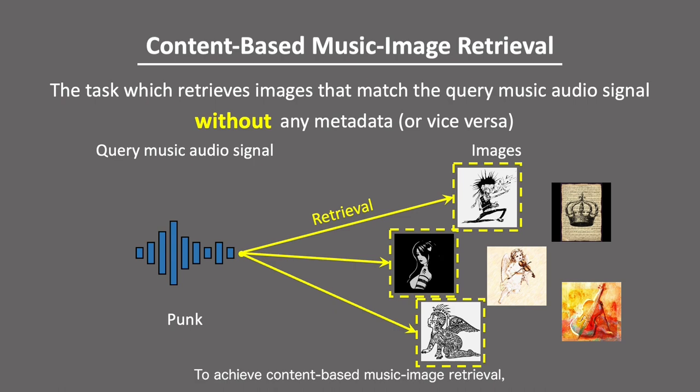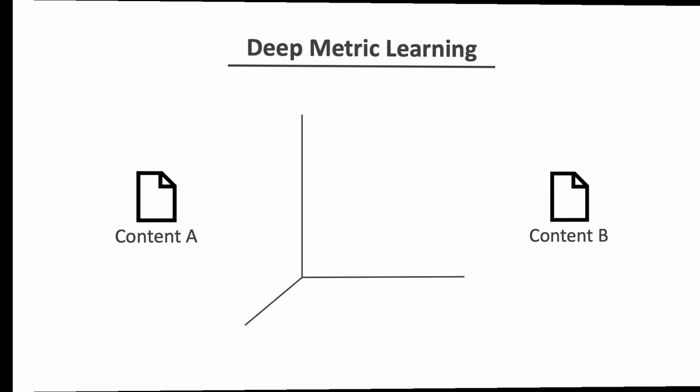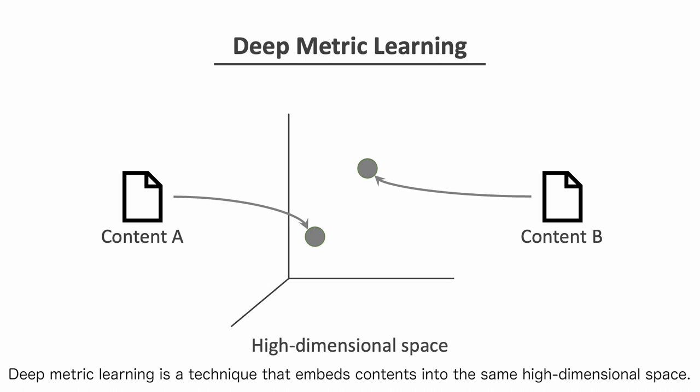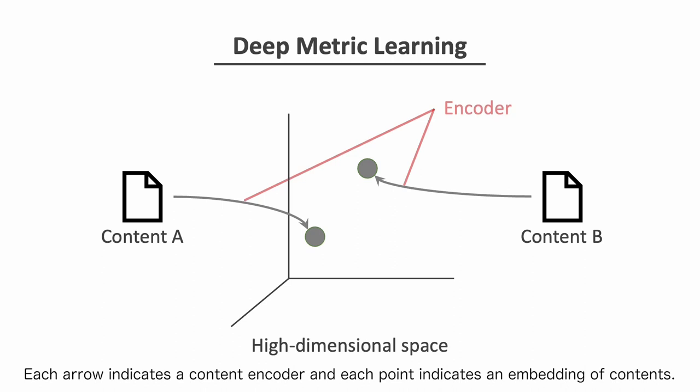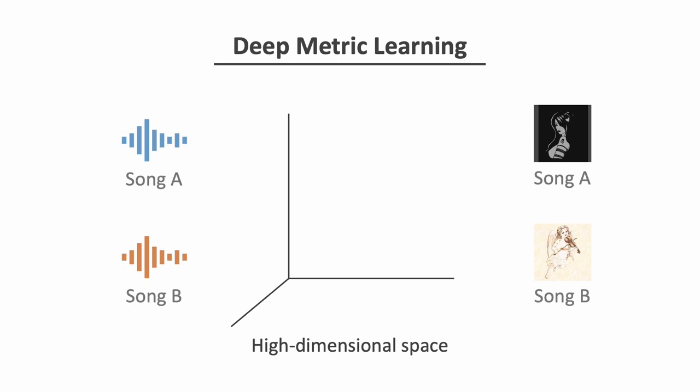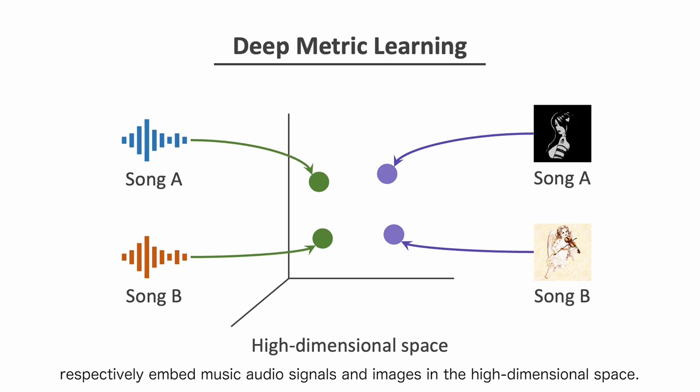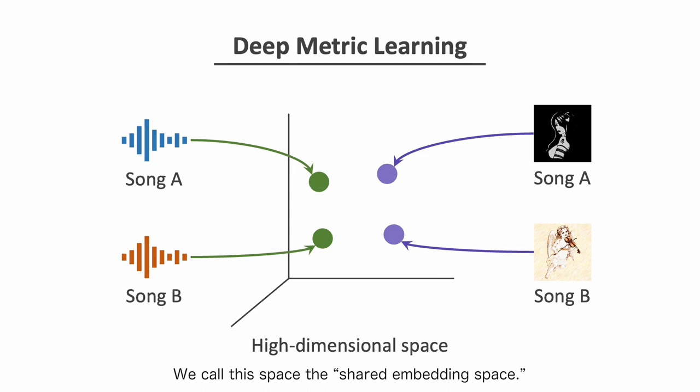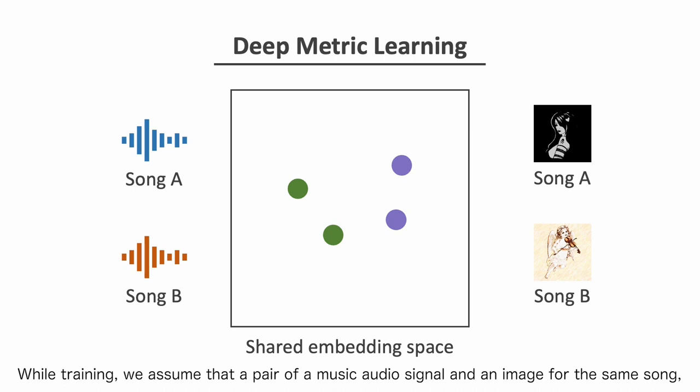To achieve Content-Based Music Image Retrieval, we adopt a Deep Metric Learning approach. Deep Metric Learning is a technique that embeds content into the same high-dimensional space. Each arrow indicates a content encoder and each point indicates an embedding of contents. For our task, we train two encoders that respectively embed music audio signals and images in the high-dimensional space. We call this space the Shared Embedding Space.